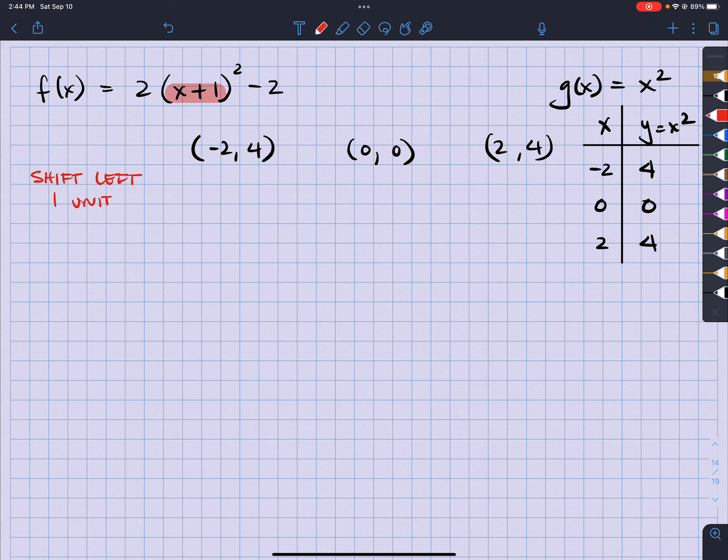So I got subtract 1 from the x value because this says plus. That means minus. Minus 1, minus 1, minus 1. So what do I get? I got negative 3, 4, negative 1, 0, and 1, 4. Okay? Done.